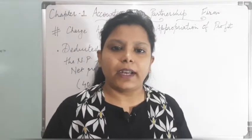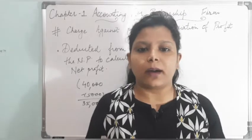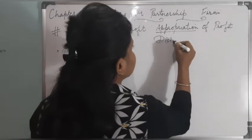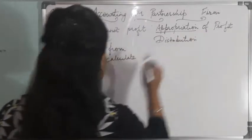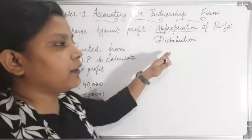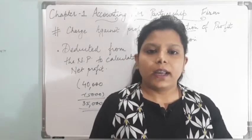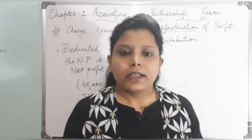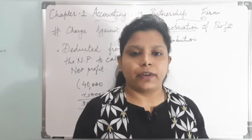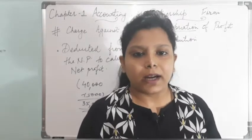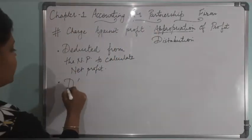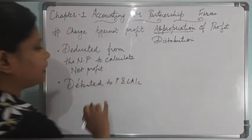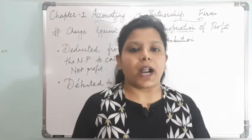Among the different types of items, interest on capital, salary, commission, and interest on drawings are appropriations — meaning distribution of profit. After calculating the actual profit, it will be distributed among the partners through these items: interest on capital, drawings, salary, commission, and reserve. These items are debited to the profit and loss appropriation account, and all those items debited to profit and loss account are a charge against profit.